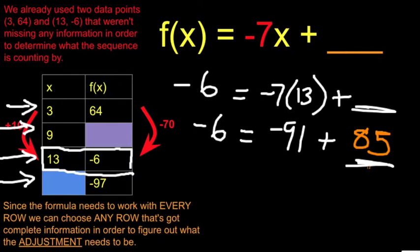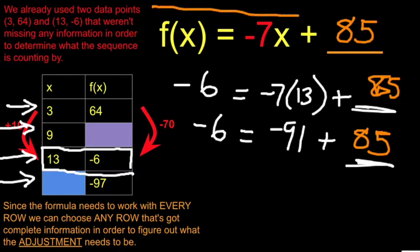Negative 91 plus 85 is negative 6, which means that my missing piece, my final piece to this formula is plus 85. And that is a complete formula.